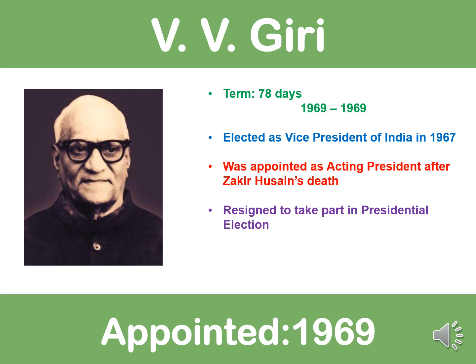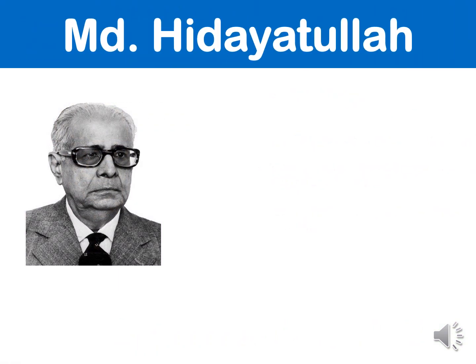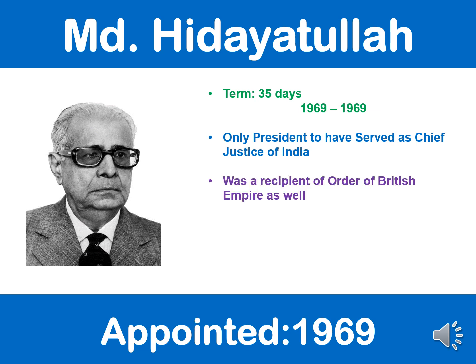After V.V. Giri resigned to take part in the presidential elections, Muhammad Hidayatullah was appointed as acting president in 1969. He served a term of 35 days. He was the only president to have served as Chief Justice of India. He was also a recipient of the Order of the British Empire. He served as acting president until the next presidential elections.